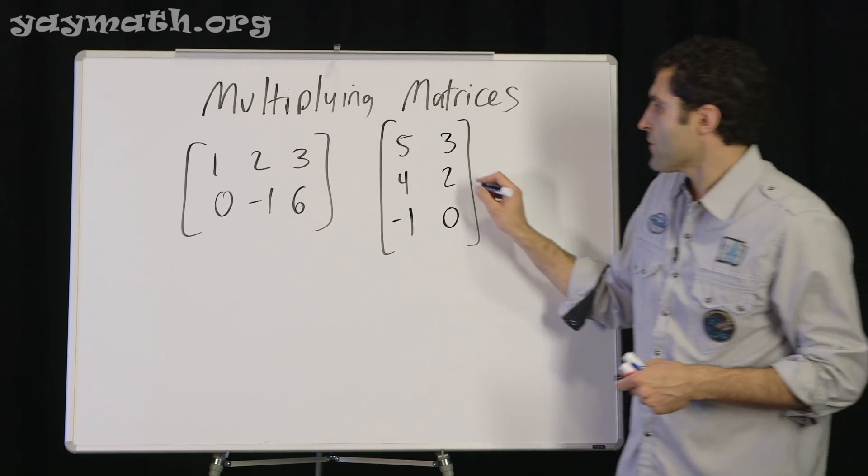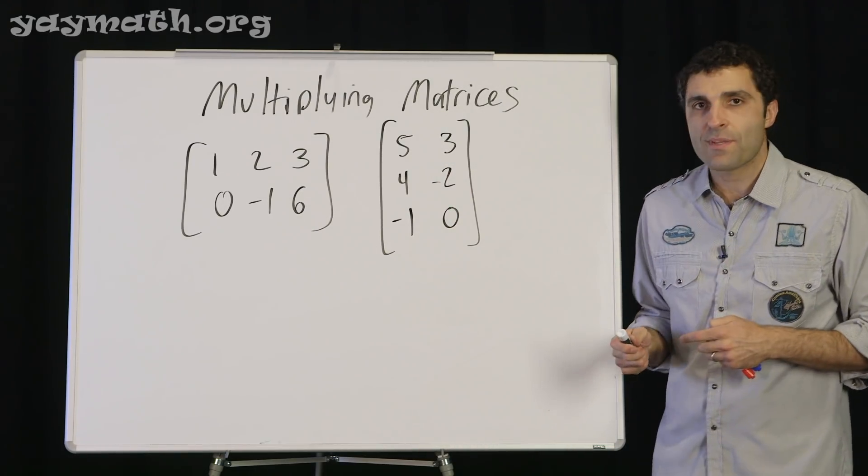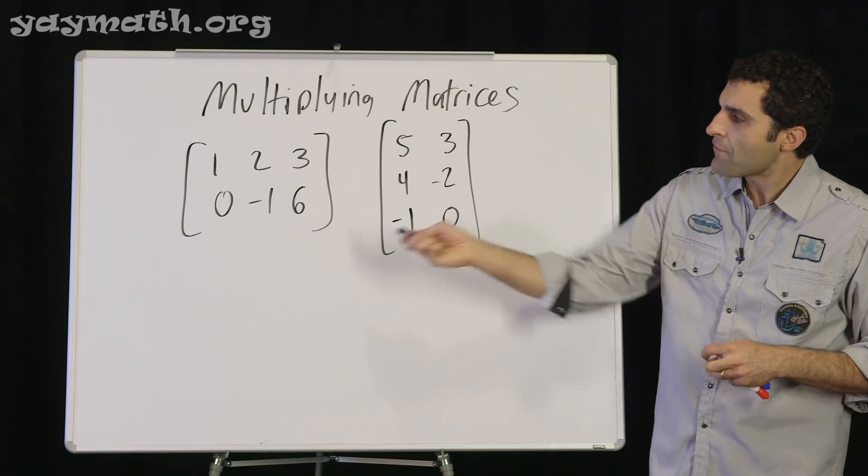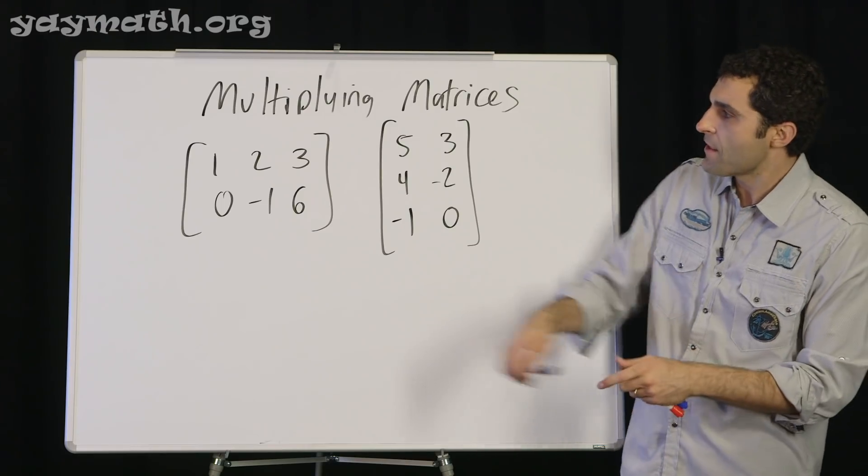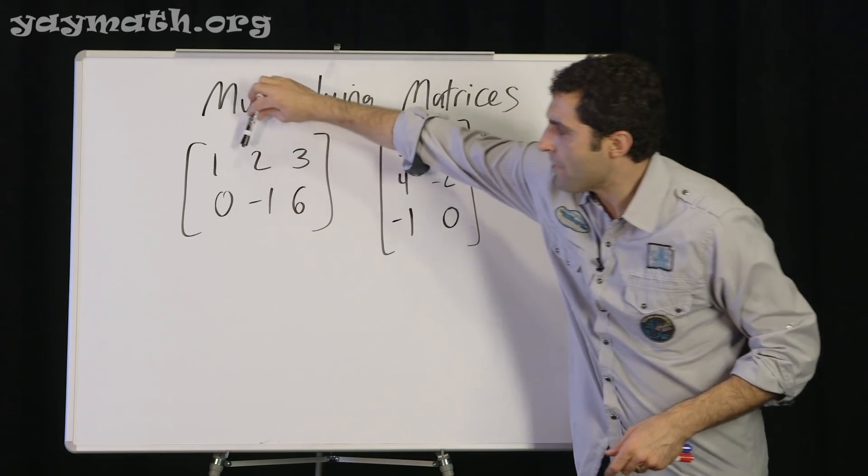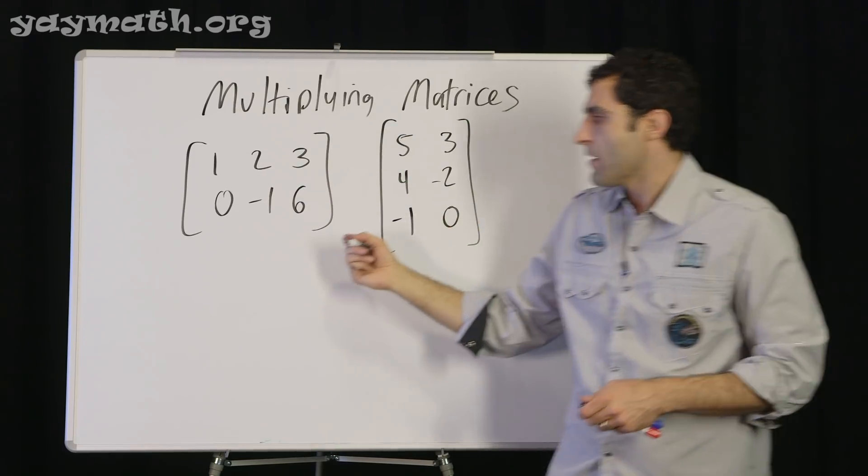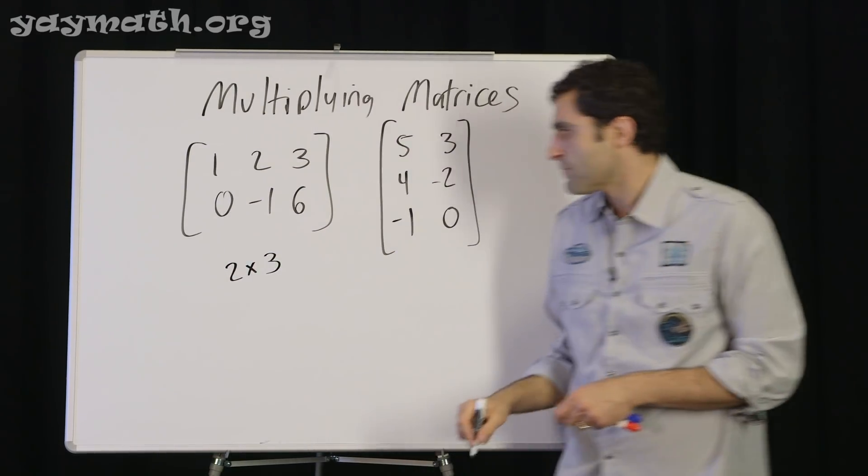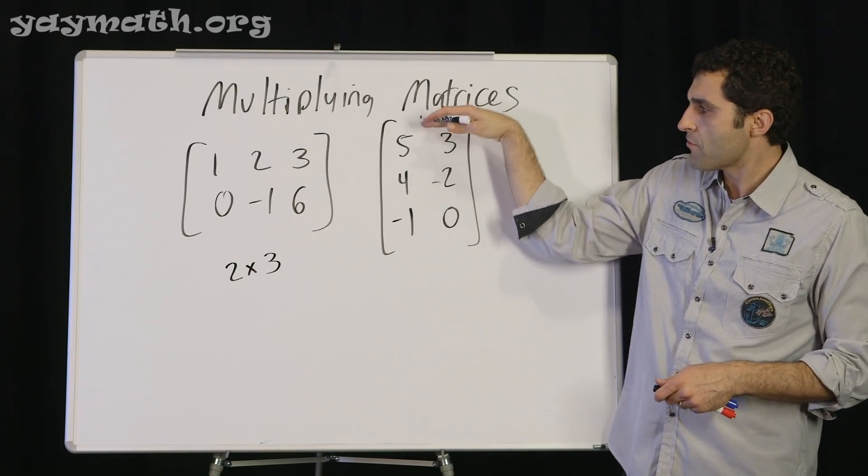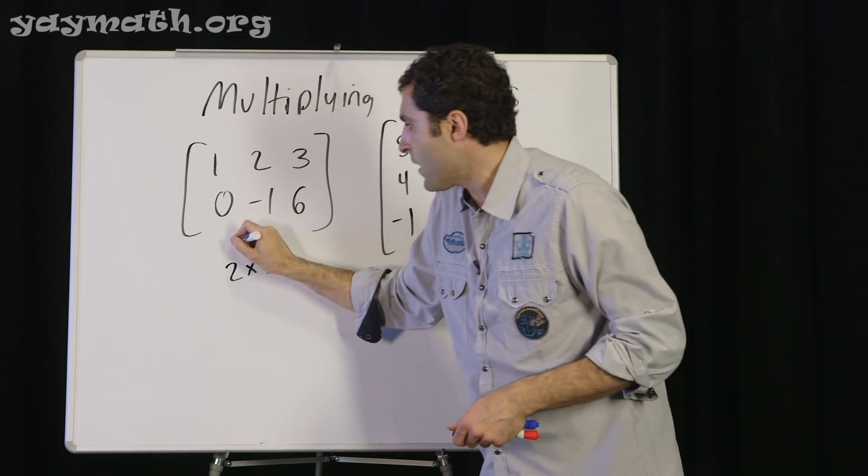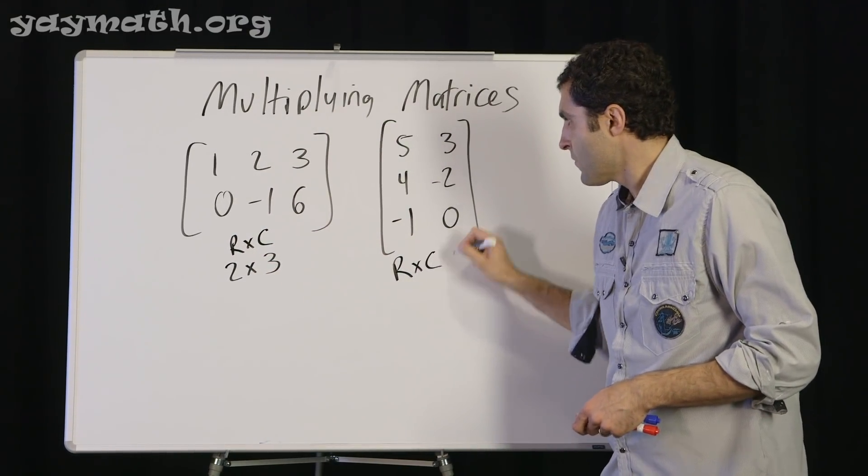Let's do another one. Let's identify what type of matrix this is. Rows first, then columns. We see there are 2 rows and 3 columns. So 2 rows by 3 columns, that would be a 2 by 3 matrix. And then doing the same thing over here. 3 rows, 2 columns. So 3 by 2.